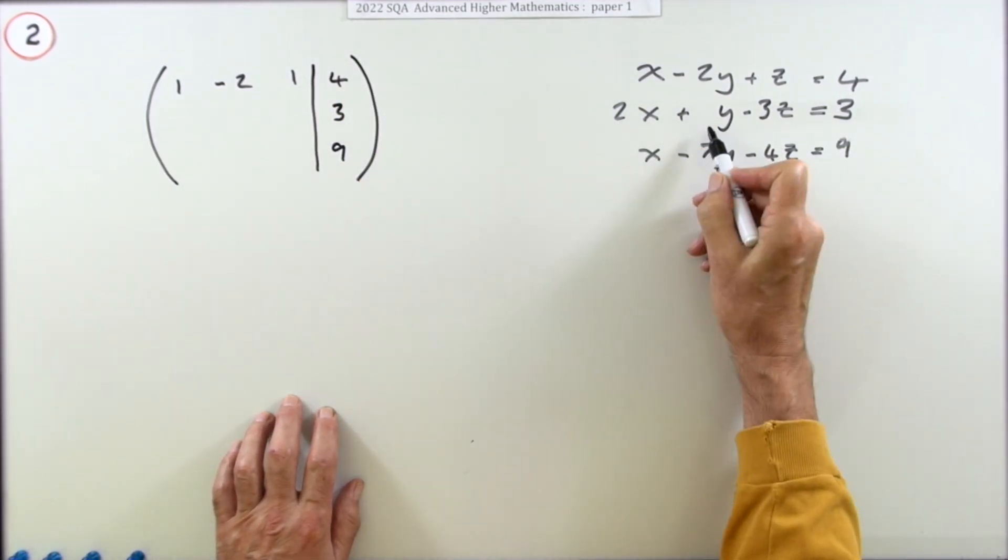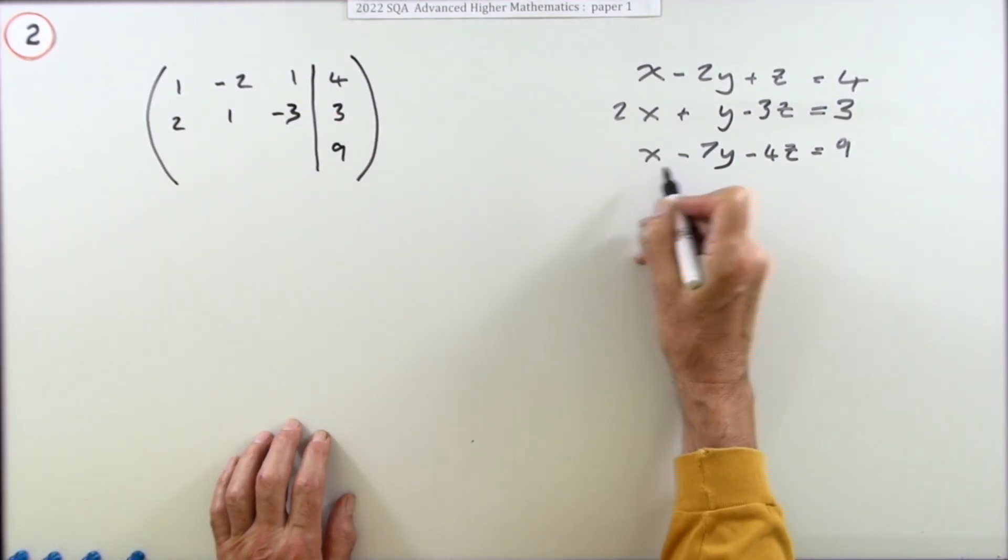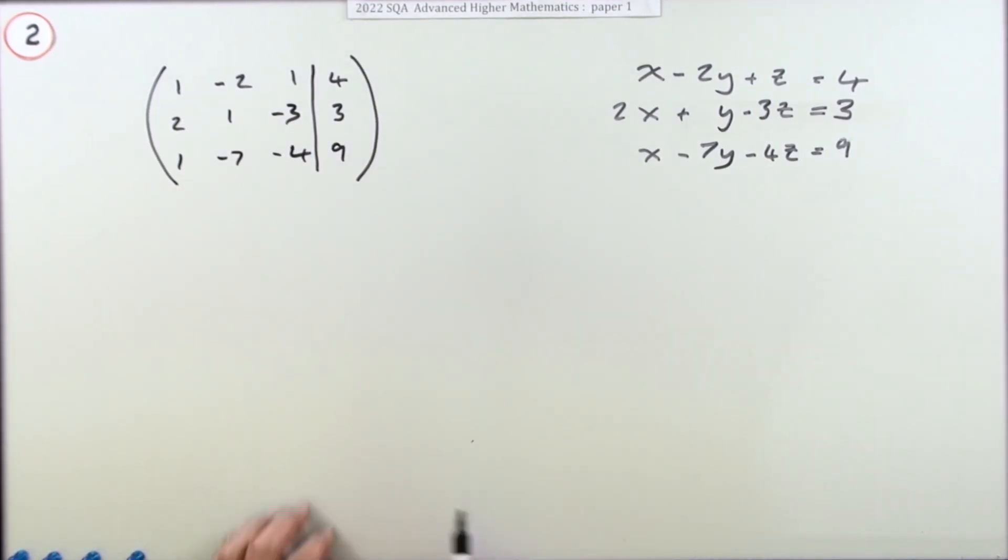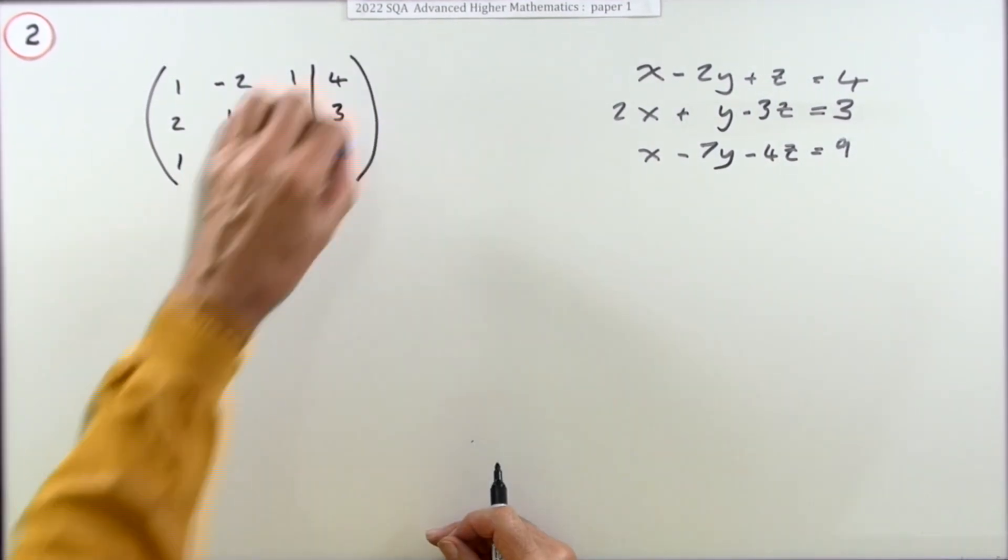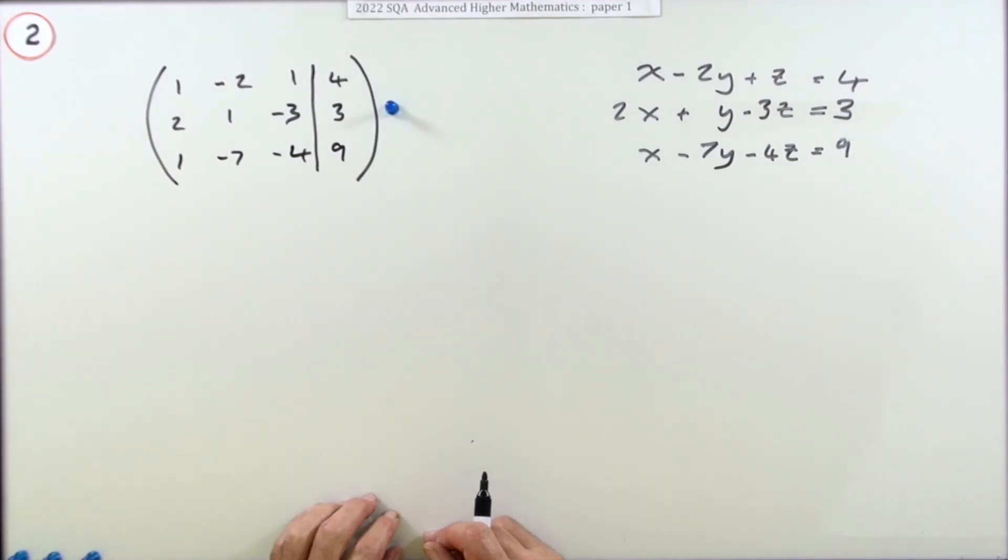Which is just a little column matrix of the values. Next: 2, 1, -3, [3], and 1, -7, -4, [9]. Now doing that gets you the first mark: creating the augmented matrix, the matrix of coefficients and values.